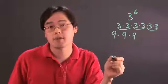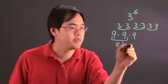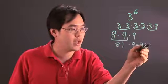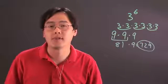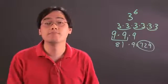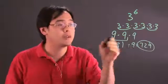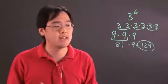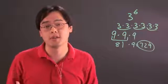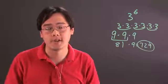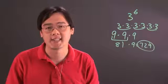9 times 9 is going to give you 81, times 9 is going to give you 729. So what that means is 3 to the sixth power is going to give you 729. If you multiply by the sixth power, you are basically breaking it up into three pairs, and the larger the base, the larger the number. I'm Jimmy Chang, and that's an illustration on how to multiply in the sixth power.